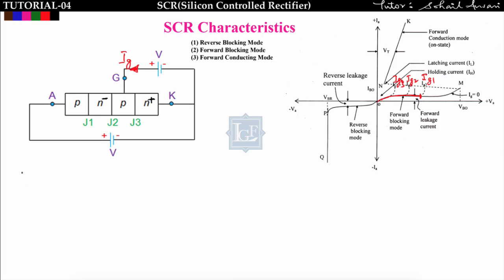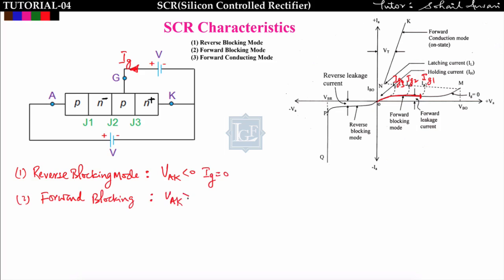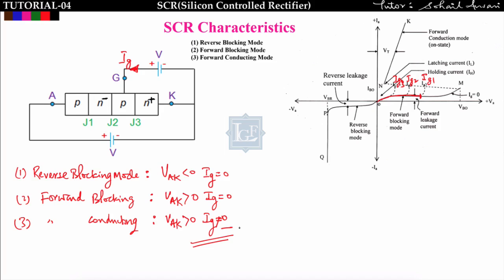Summarizing all modes with respect to input voltage: in reverse blocking mode, VAK is less than zero and IG equals zero; in forward blocking mode, VAK is greater than zero and IG equals zero; in forward conducting mode, VAK is greater than zero and IG is not equal to zero. The time taken to reach conduction state depends on the gate current — more gate current means faster transition to conduction.